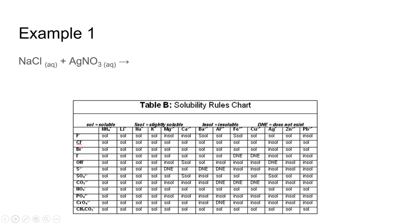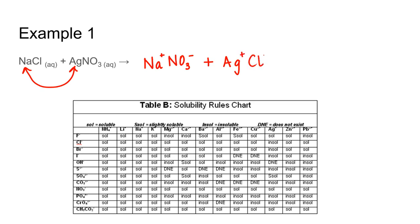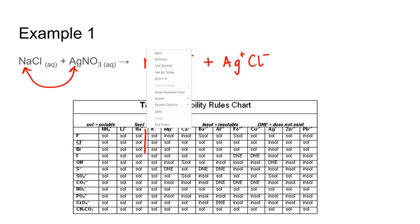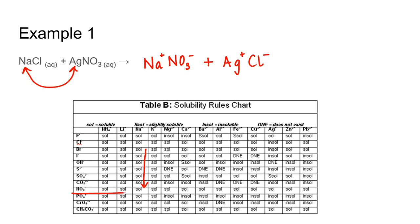Let's do some examples. Predicting the products of a double replacement reaction and the identity of any solid precipitate: sodium and silver switch places. Sodium's new partner is nitrate, and silver's new partner is chlorine. Checking the intersection of sodium and nitrate — soluble, aqueous, as all nitrates are. Checking the intersection of silver and chlorine — insoluble solid. So AgCl is our solid precipitate, and this reaction is already balanced.